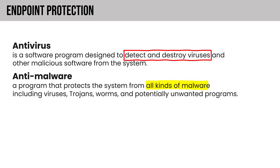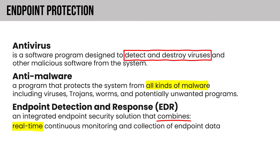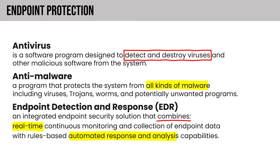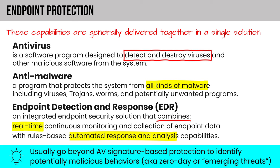Anti-malware focuses on all kinds of malware: viruses, trojans, worms, and potentially unwanted programs. Then we have endpoint detection and response. This is integrated endpoint security that combines real-time continuous monitoring and collection of endpoint data, as well as rules-based automated response and analysis capabilities — which you'll sometimes hear termed investigation. These capabilities are generally delivered together in a single solution today, and they usually go beyond antivirus signature-based protection to identify potentially malicious behaviors — zero-day behaviors or emerging threats — using machine learning and artificial intelligence.